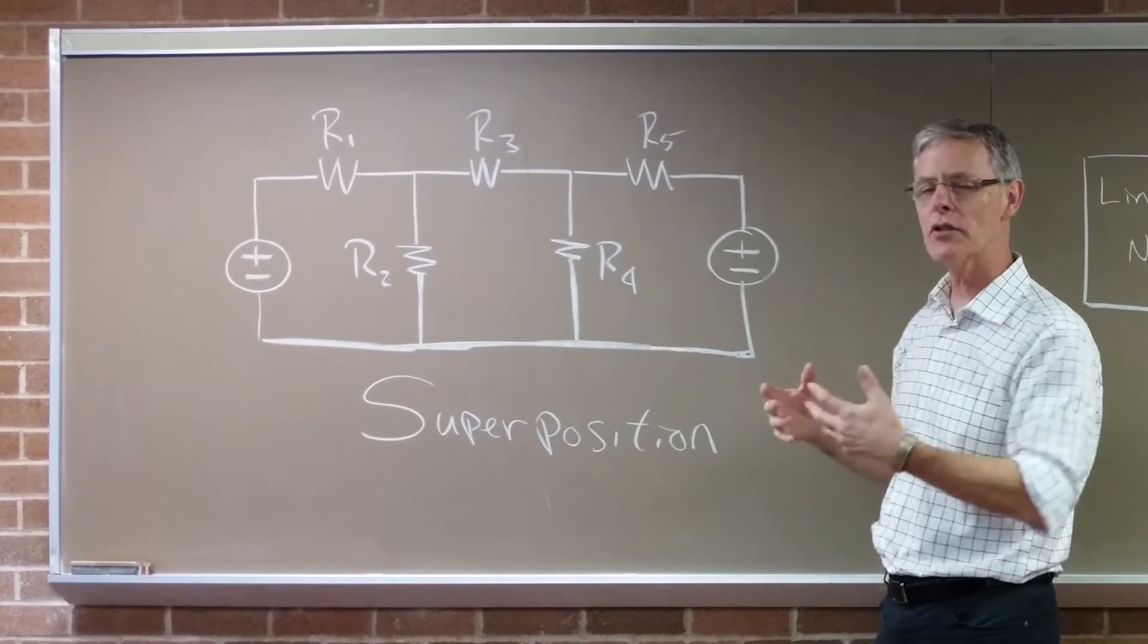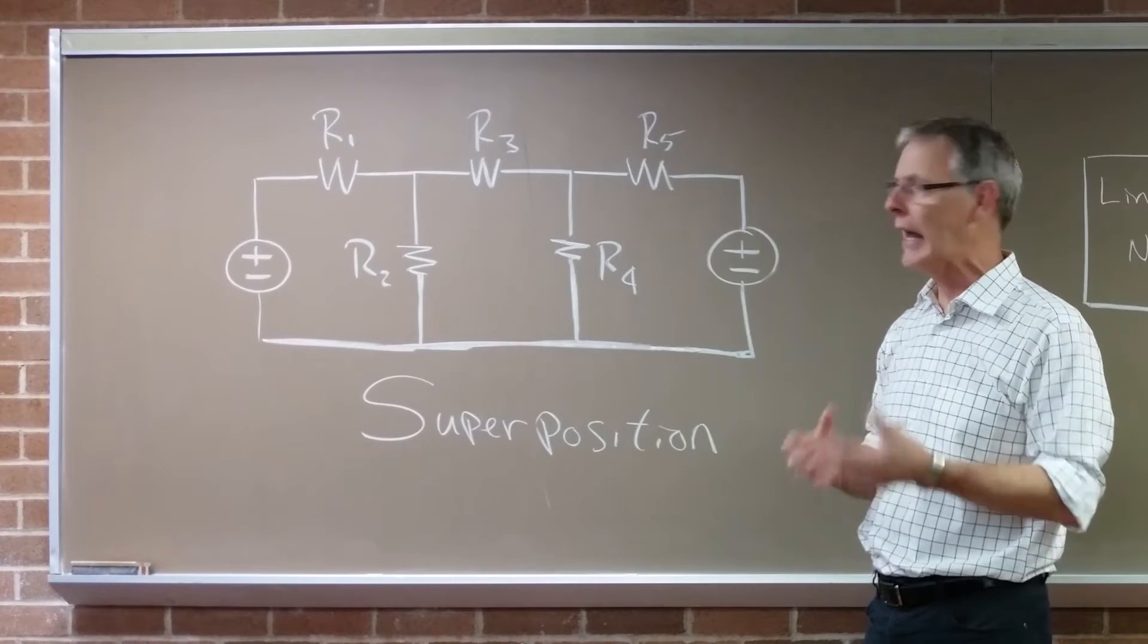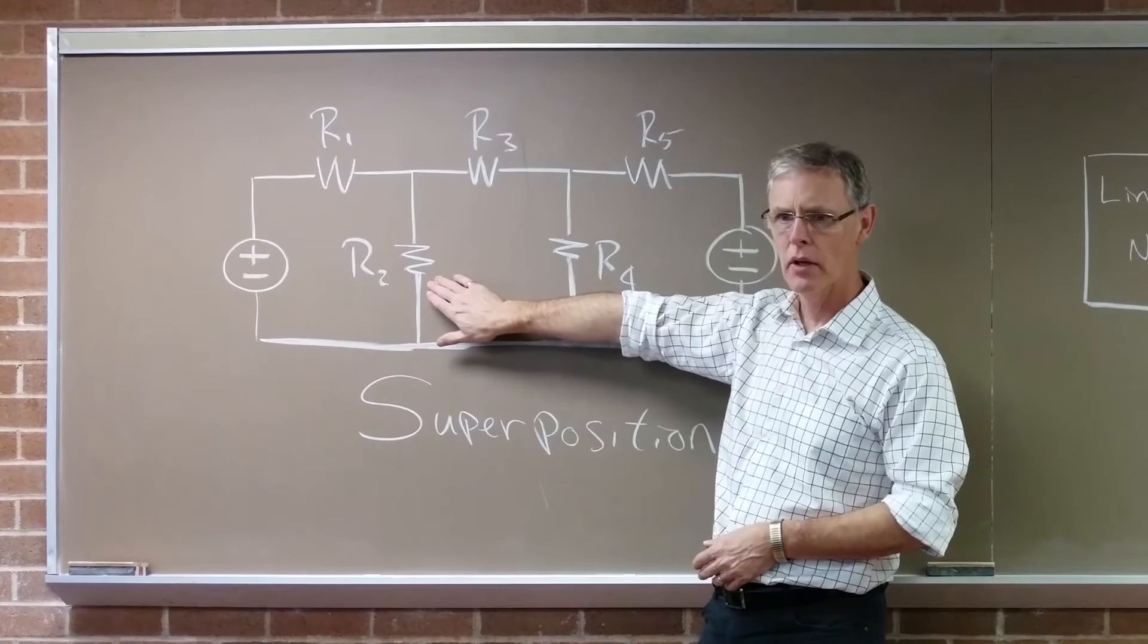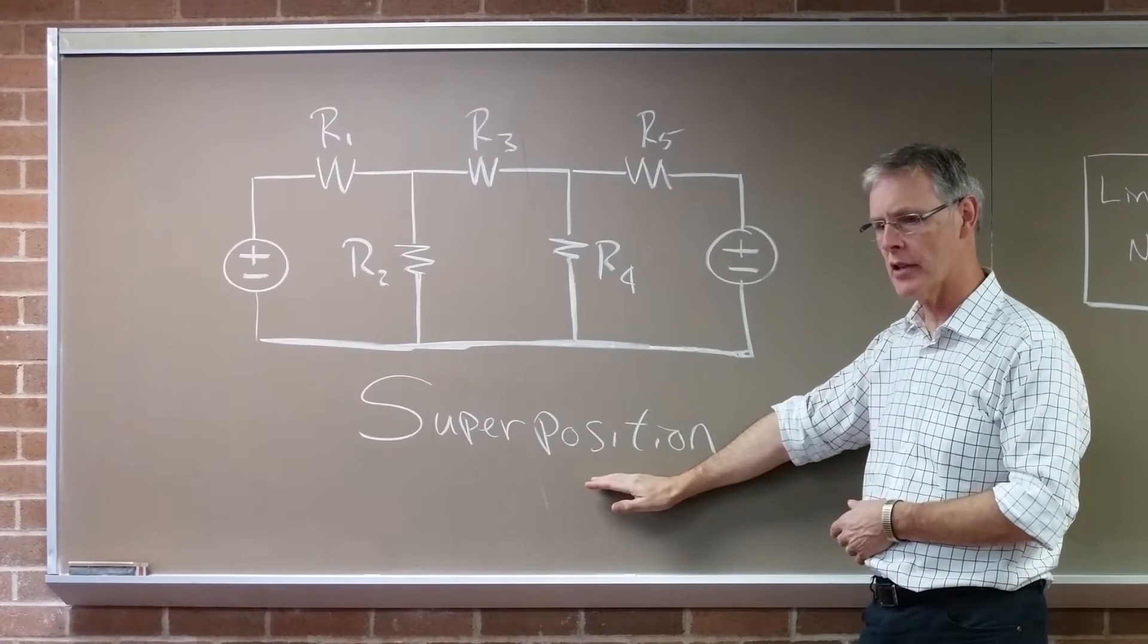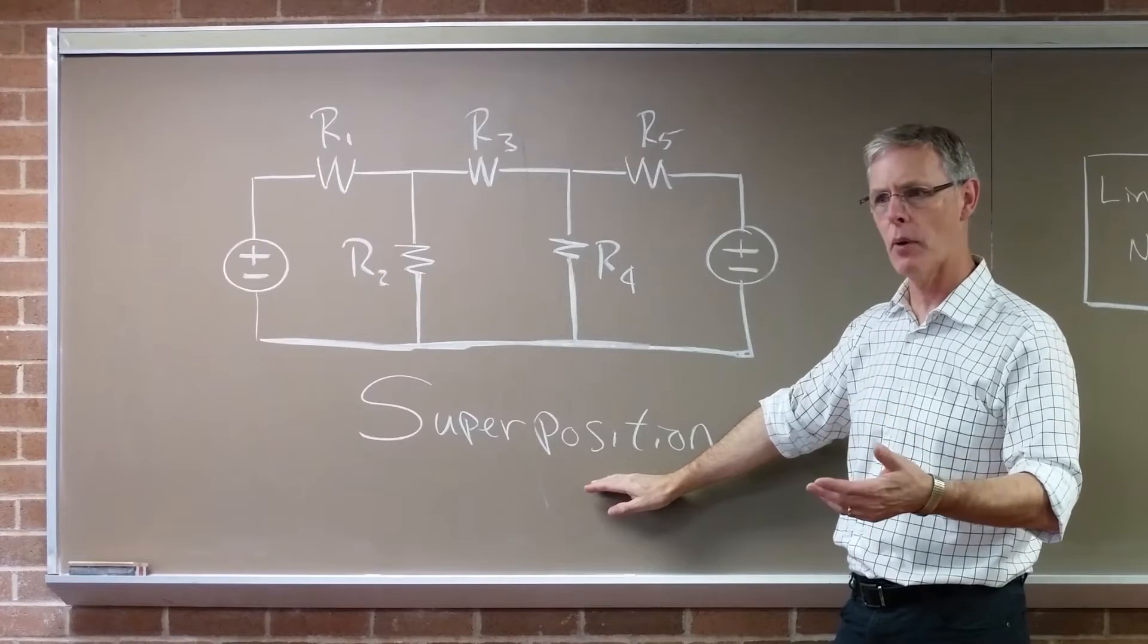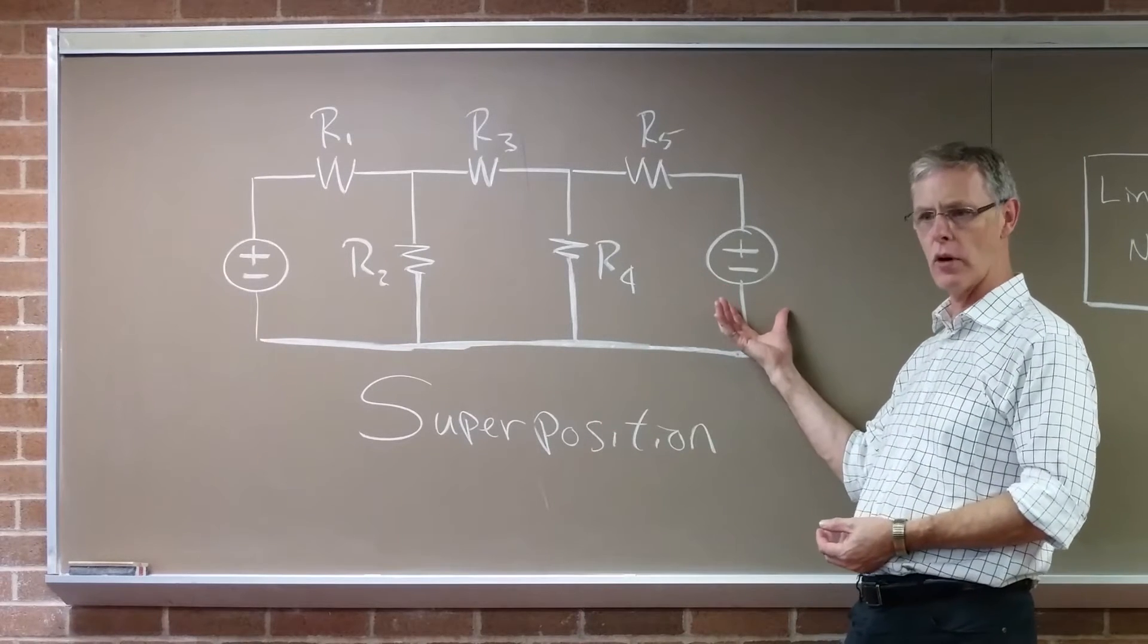When we are interested in the response, the voltage or current out of any particular circuit element, for example R2, to both of those sources, superposition tells us that we can get that response by looking at the individual responses to each source acting alone.